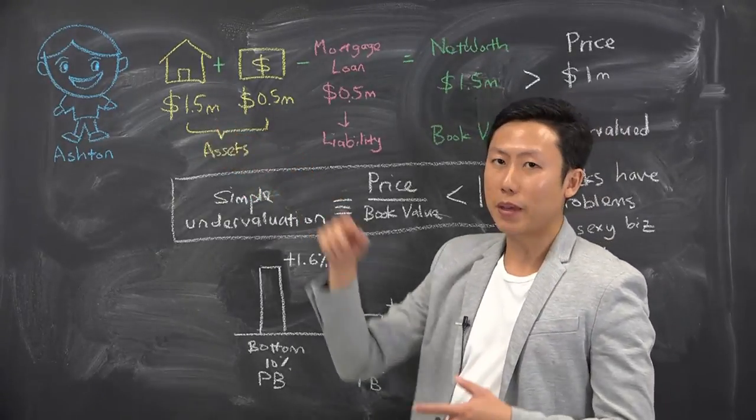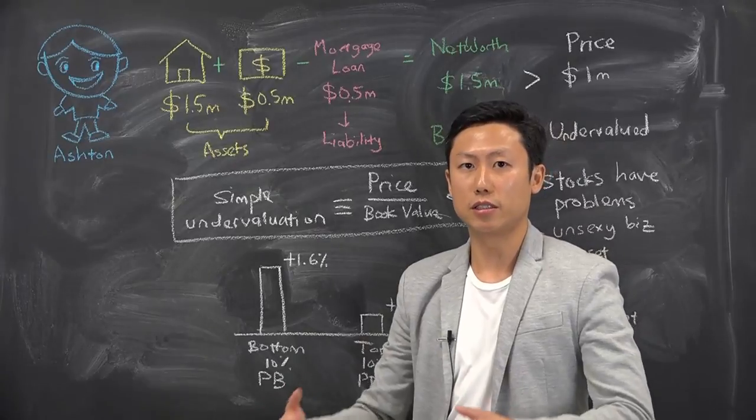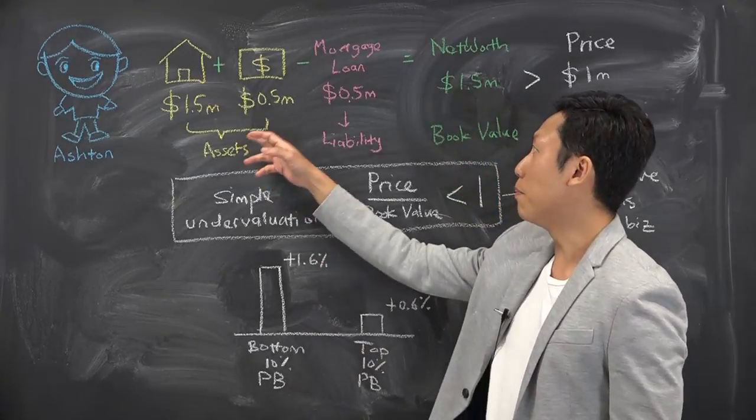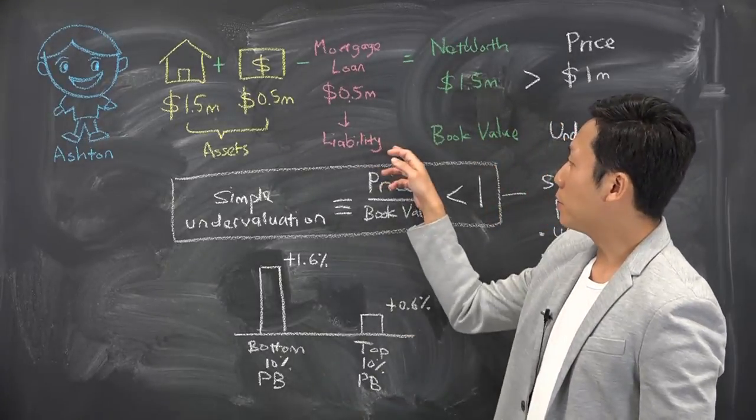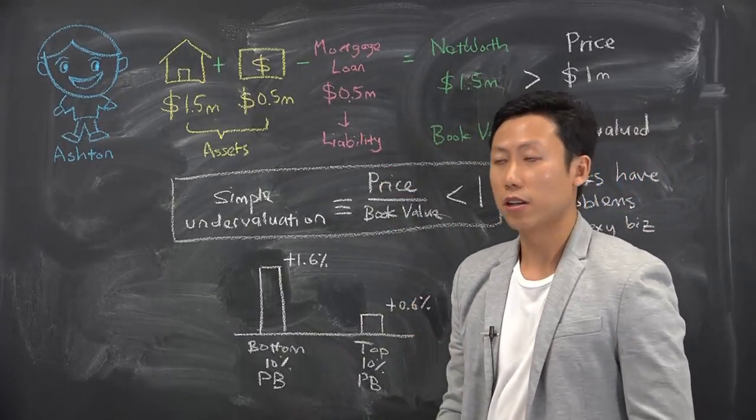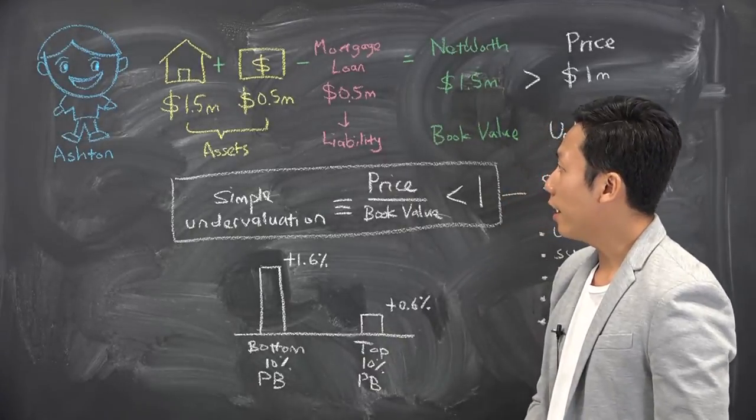At the same time, he didn't fully pay his house using all his cash, so he took some bank loan and there's an outstanding amount of another $500,000. That forms the liability for Ashton in this case.